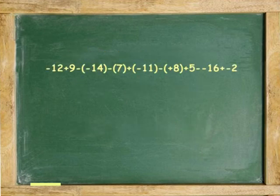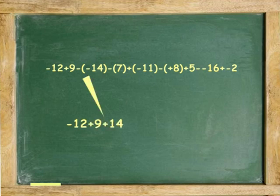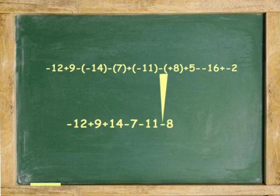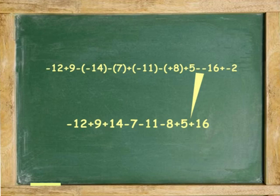So, the expression with only one sign in between becomes, negative 12, plus 9, two of the same, positive 14, minus 7, two different, negative 11, two different, negative 8, plus 5, two of the same, positive 16, two different, negative 2.